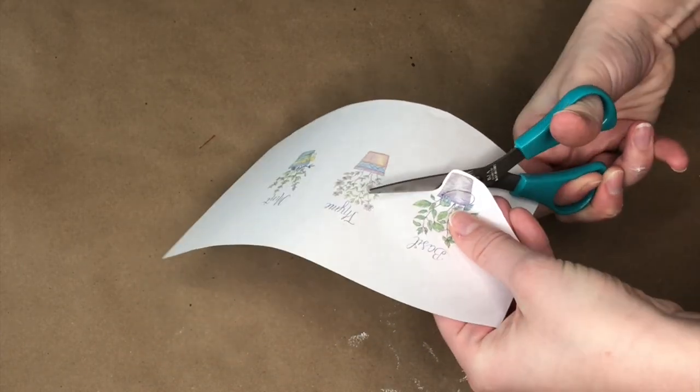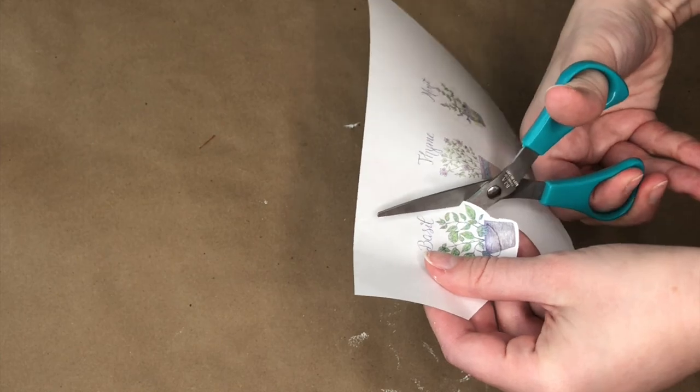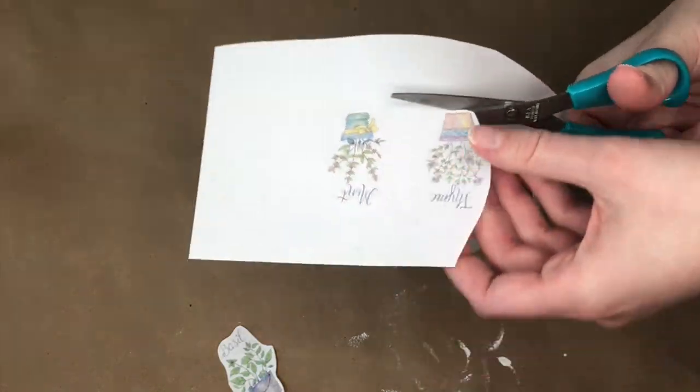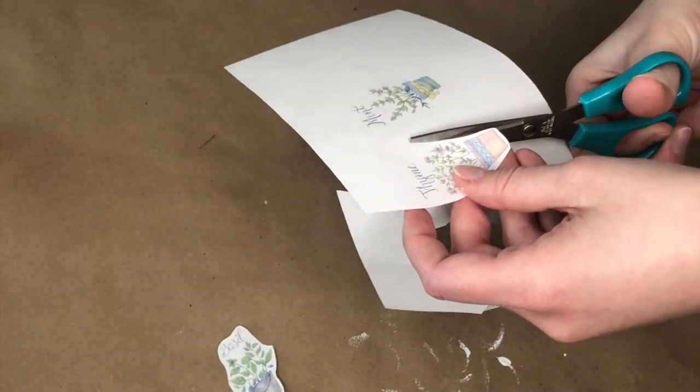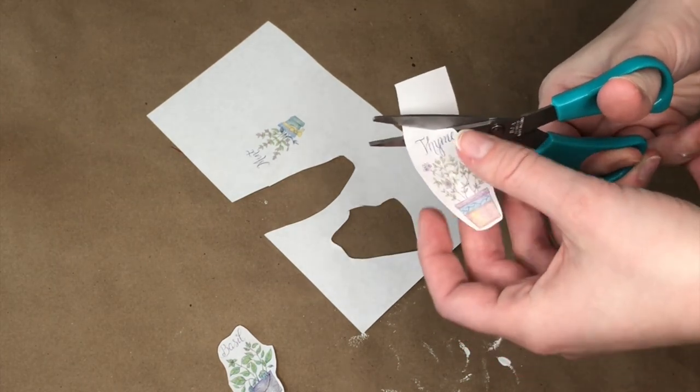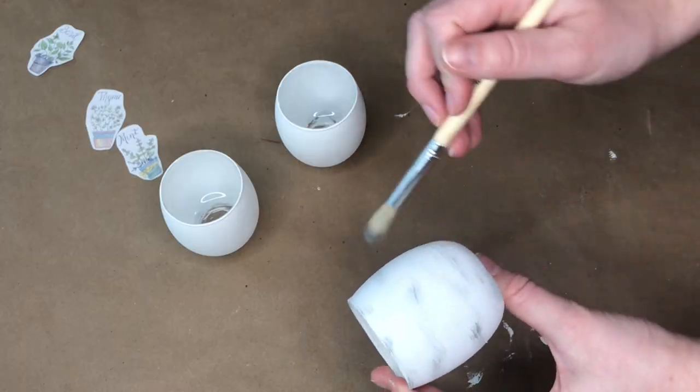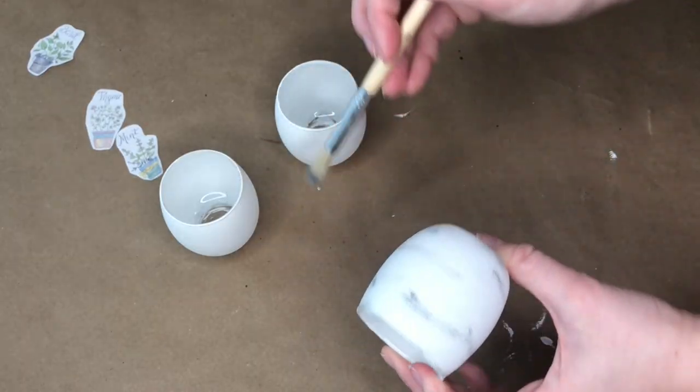For the labels on our jars, I found these gorgeous hand-drawn looking labels online. I will be sure to add a link down below so that you guys can print these out and use them on your own. And all that I did was print out these gorgeous images. There are all kinds of different herbs to choose from. I ended up using basil, thyme, and I think mint.